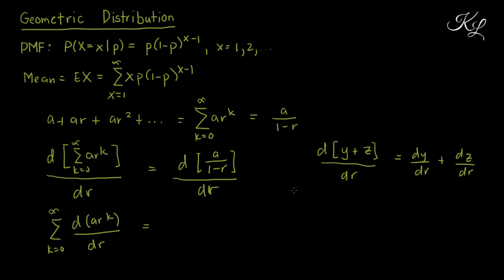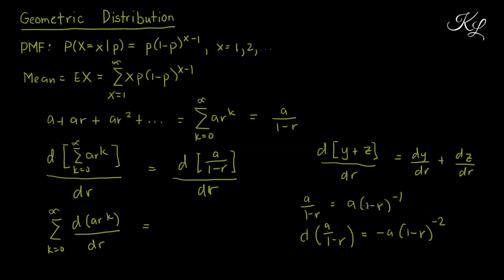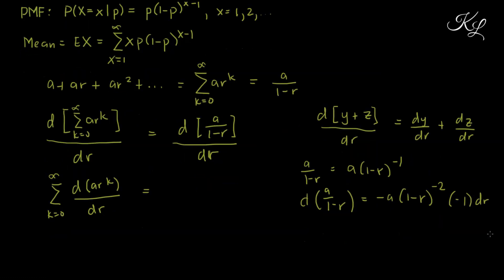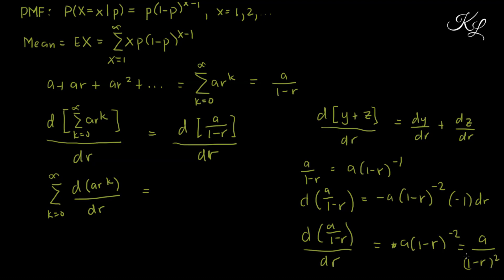For the right-hand side, a over (1-r) equals a times (1-r)^(-1). Differentiating: the derivative is -1 times a times (1-r)^(-2), multiplied by the derivative of (1-r) which is -1. So the derivative of a over (1-r) with respect to r equals a over (1-r)².